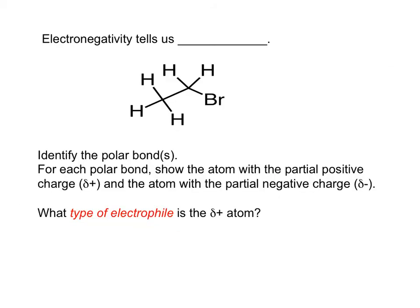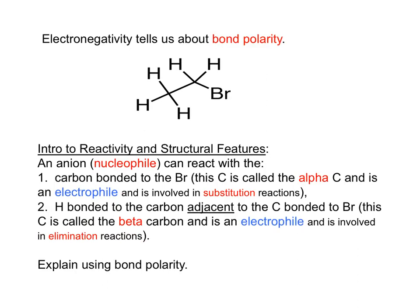Let's review some structure and bonding principles. This bond has the biggest difference in electronegativity, which means that the carbon has a partial positive charge and the Br has a partial negative charge. That carbon with the partial positive charge is an electrophile, also called the alpha carbon, which is involved in substitution reactions — which we will look at later in this course.